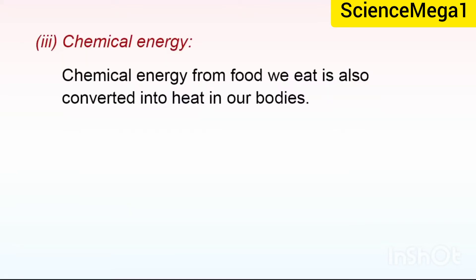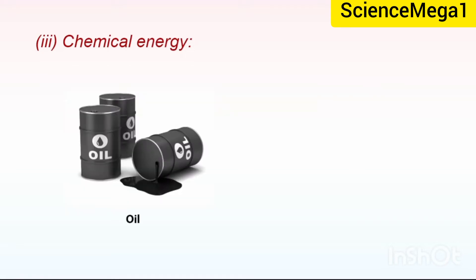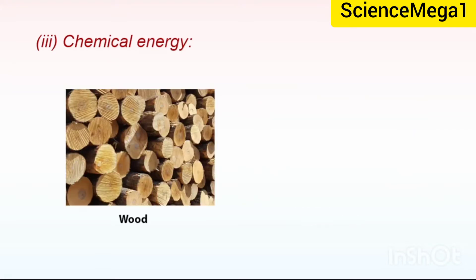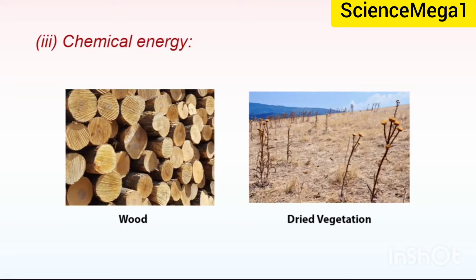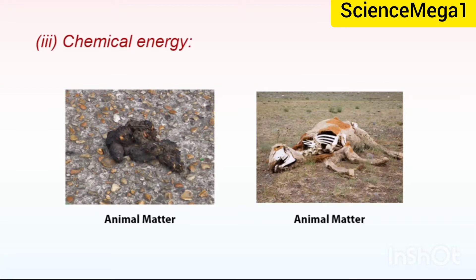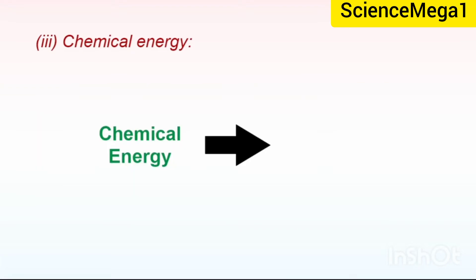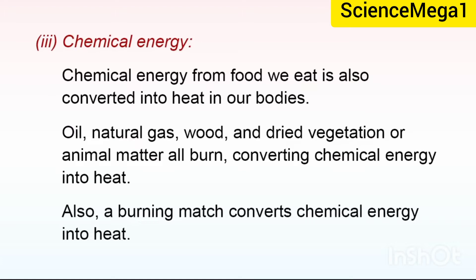Chemical energy from food we eat is also converted into heat in our bodies. Oil, natural gas, wood, and dried vegetation or animal matter all burn, converting chemical energy into heat. Also, a burning match converts chemical energy into heat.